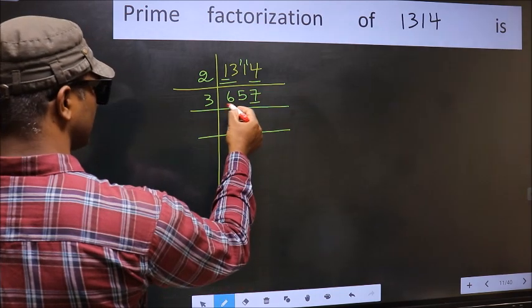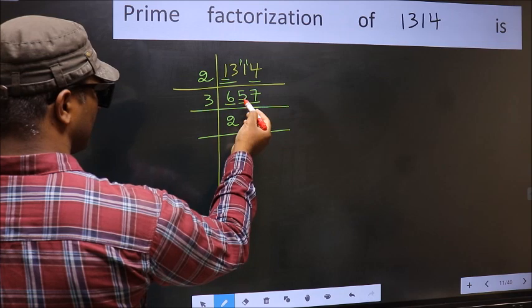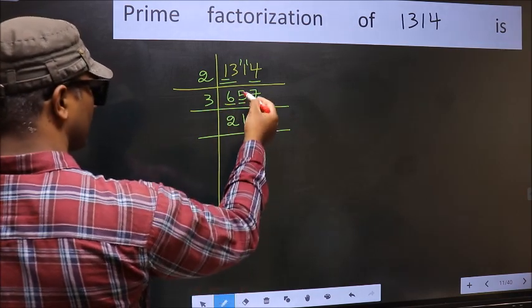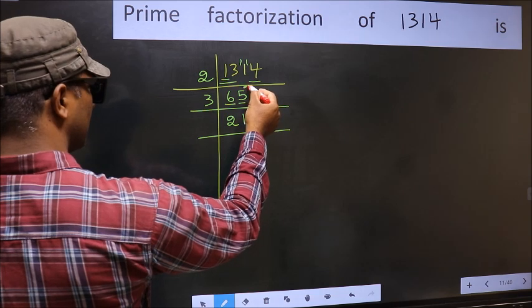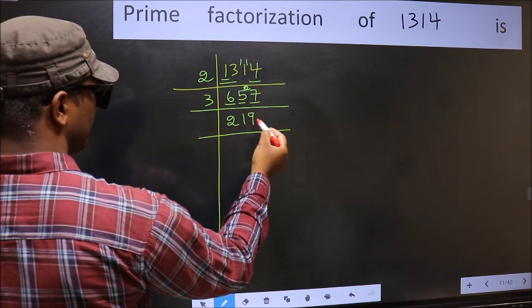First number 6. When do we get 6 in 3's table? 3 times 2 is 6. The other number 5. A number close to 5 in 3's table is 3 times 1 is 3. 5 minus 3 is 2, carry forward 27. When do we get 27 in 3's table? 3 times 9 is 27.